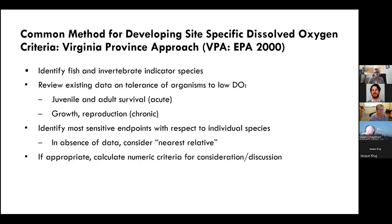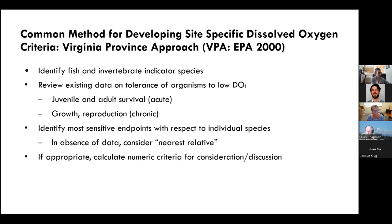We've been working for the last 15 years to use an approach called the Virginia Province Approach, which is the commonly accepted method by regulators to develop site-specific dissolved oxygen criteria. In a nutshell, the approach is to identify fish and invertebrate species who live there, review existing data on their tolerance to low dissolved oxygen, looking at both acute and chronic endpoints, identifying the most sensitive endpoints, and in the absence of data, consider a nearest relative in order to come up with a number.